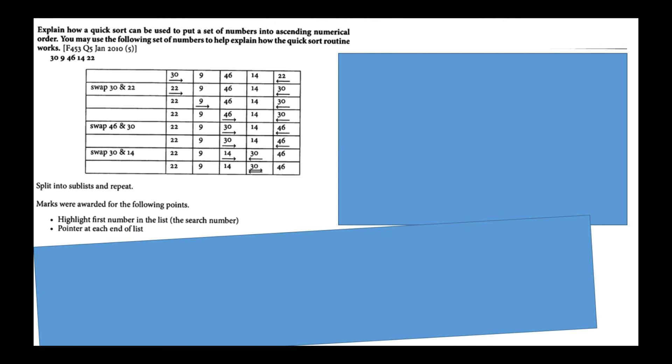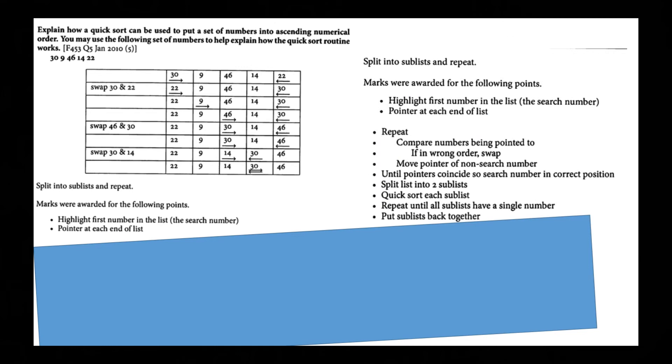So split into several lists and repeat. Marks are ordered for highlighting. So highlight first number in list the search number. Pointers at each end of the list. So that would be the arrows. So this would be when you just use the first number in the list. So that would be 30. So you get 30 in the right place then you move on to the next one. So you split into sublists and repeat. Then you repeat. So repeat the compare numbers being pointed to if in wrong order swap. Move pointer or non-search number. Until pointers coincide. So search number is in correct position. Split list into two sublists. Quicksort each sublist. Repeat until all sublists have a single number. Put sublists back together.